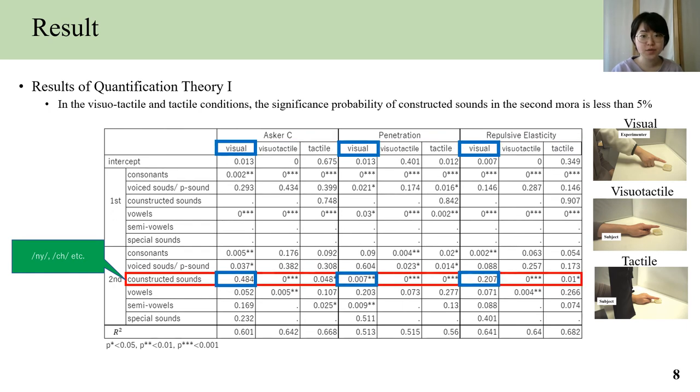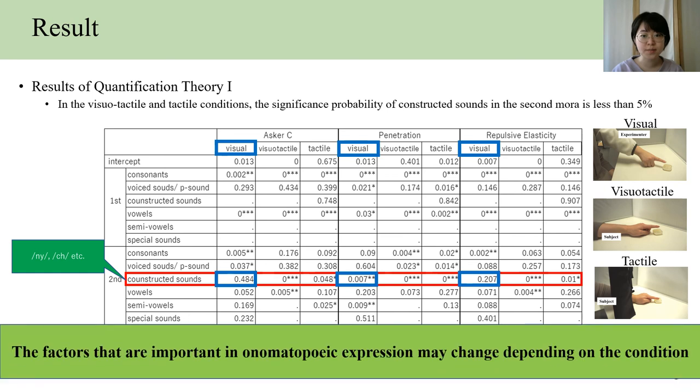While in the visual condition, the significance probability is not less than 5%, suggesting that the factors that are important in onomatopoeic expression may change depending on the condition.